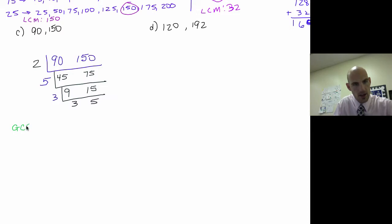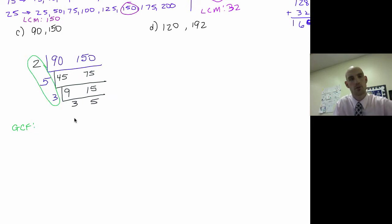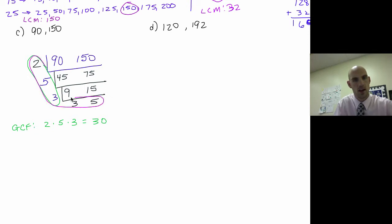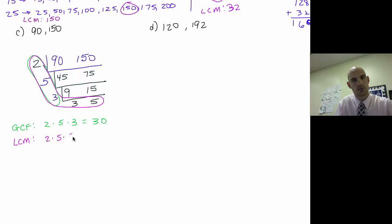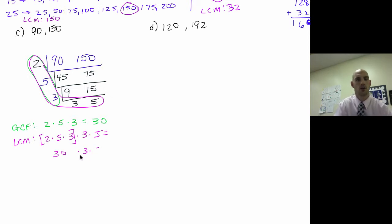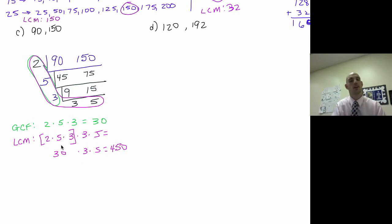The greatest common factor and least common multiple are right there — I just needed this little bit of work. The greatest common factor is 2 times 5 times 3, which is 10 times 3 = 30. The least common multiple uses the full L-shape: 2 times 5 times 3 times 3 times 5. That's 30 times 15, or 30 times 3 = 90, times 5 = 450.